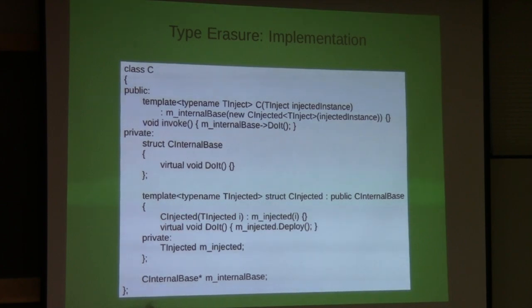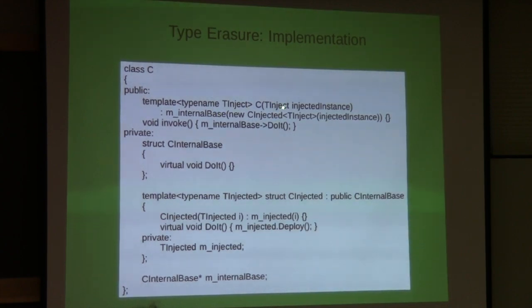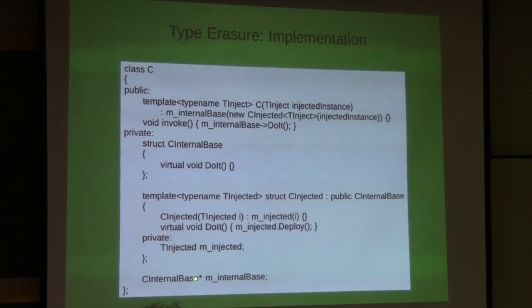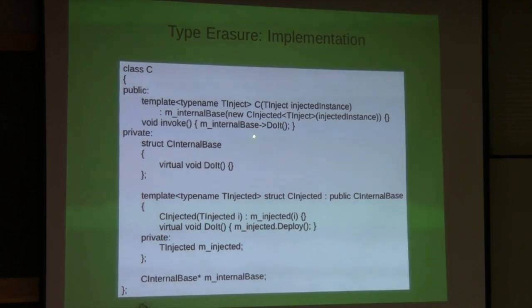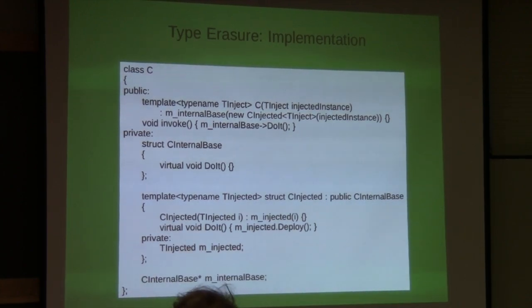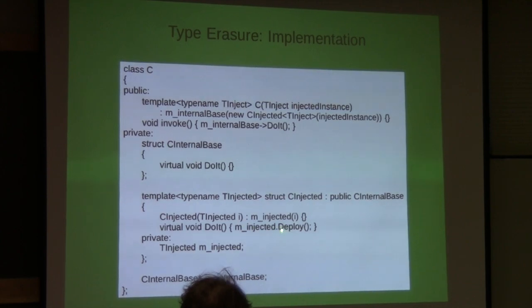What we're doing is instantiating this in the constructor, which is templated. So we can instantiate a new C_injected and store it in the pointer - which should be a shared pointer - of our internal base. Then when we call invoke, we just call do_it, which will use standard C++ polymorphism and execute the derived class, calling deploy on the injected instance. There is the magic sauce. By using polymorphism this way, we hide the details from the main class and execute the do_it method at a time defined by the client.